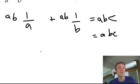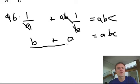A's cancelled. B times 1 is b. Plus, here the b's cancelled. A times 1 is a. So what I'm left with is b plus a equals a, b, c.